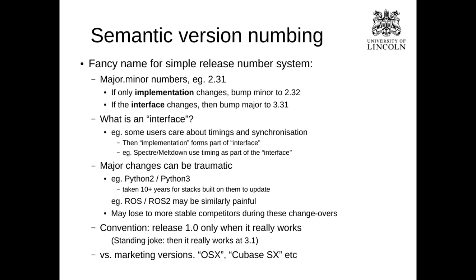Under semantic version numbering, if you bump the version from 2.3.1 to 2.3.2, you're only changing the implementation — your users don't care, the API is the same, and they'll happily upgrade. But if you accidentally change the API and only bump the minor number, you'll be in trouble. If you do change the API, you have to bump the major number — so you'd go from 2.3.1 to 3.3.1.